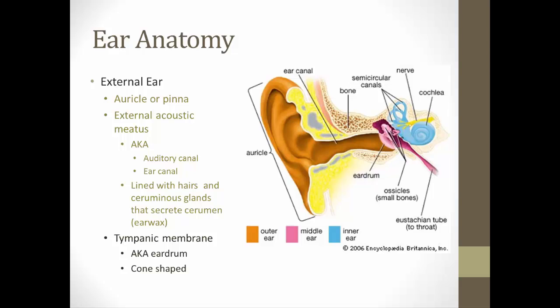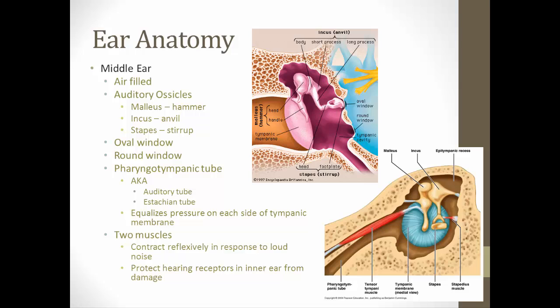Some sources indicate that the tympanic membrane is part of the middle ear, but the textbook places it in the outer ear. The middle ear is air-filled and contains the auditory ossicles, or bones — these are the malleus, incus, and stapes, or hammer, anvil, and stirrup. These are the smallest bones of the body.